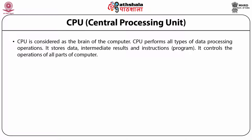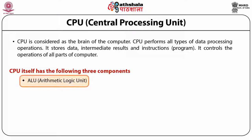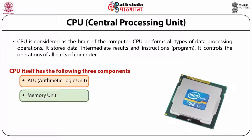The CPU or the central processing unit is considered as the brain of the computer. CPU performs all types of data processing operations. It stores data, intermediate results and instructions. It controls the operations of all parts of the computer. CPU has the following three components: arithmetic logical unit, memory unit and control unit.